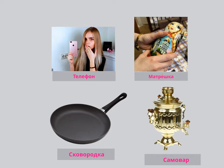There's a situation here where there's a girl with an iPhone — ТЕЛЕФОН. We could say: ОНА КУПИЛА ТЕЛЕФОН. Кому? СЕБЕ — she bought a phone for herself. Она купила себе телефон. In the second example, she bought a phone for her mother — ОНА КУПИЛА ТЕЛЕФОН МАМЕ. So МАМЕ is our dative, just like СЕБЕ.